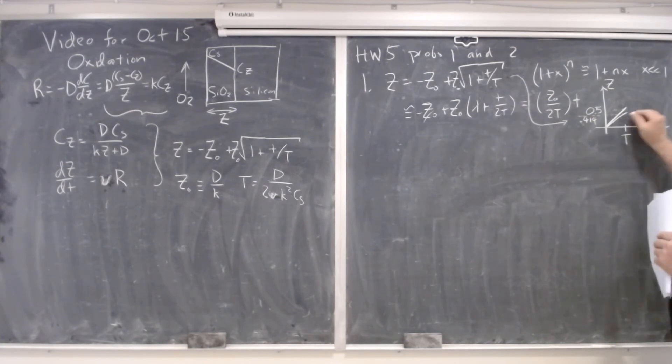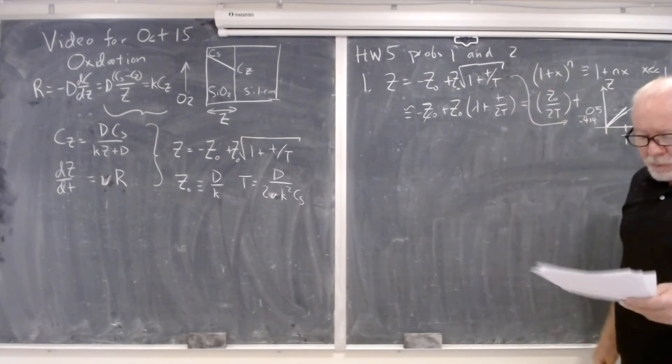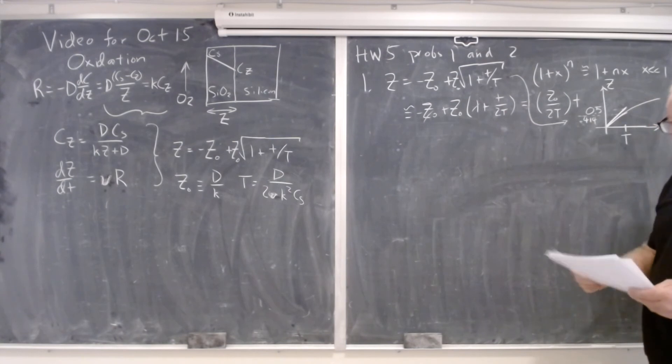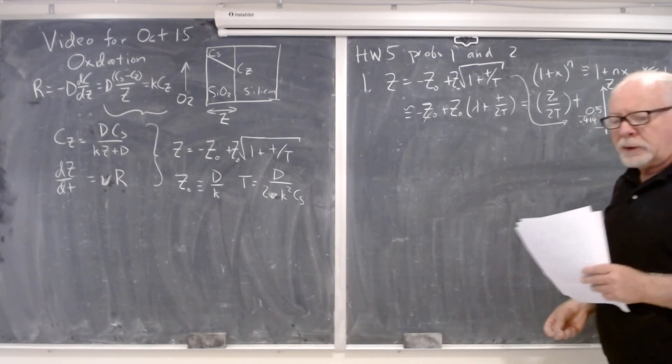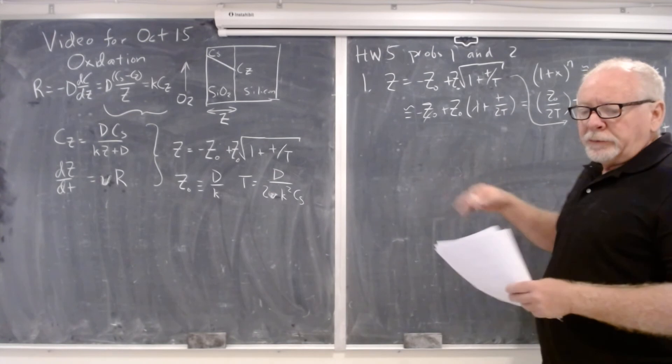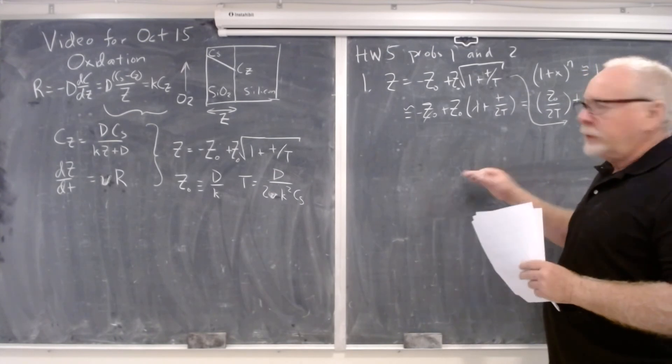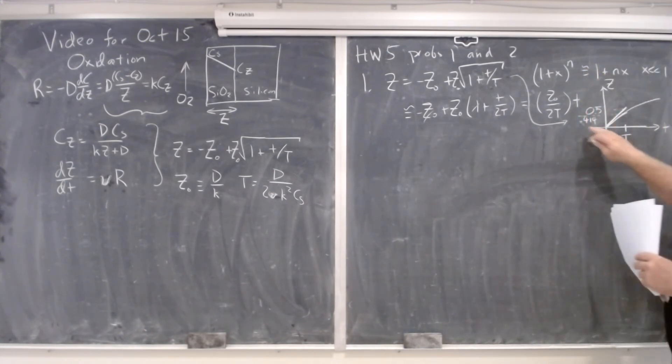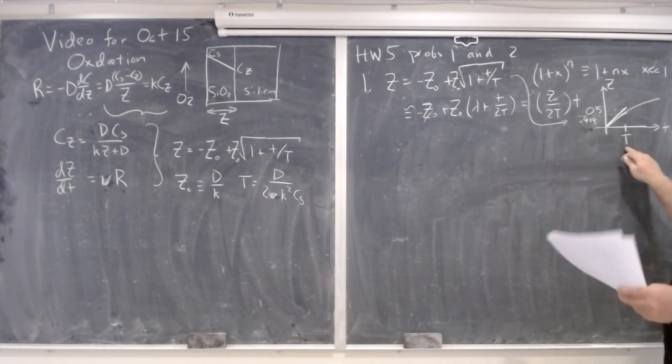And so that tells you how much you're off if you use the linear approximation at t equal to capital T. Basically this is the linear approximation, and the real function does something like that, where it goes as a square root thing. So that was problem one, that was all I wanted you to do. The point of the problem was to make sure you understand that it is approximately linear up to a certain point, and what the error of that approximation would be by the time equals to T.